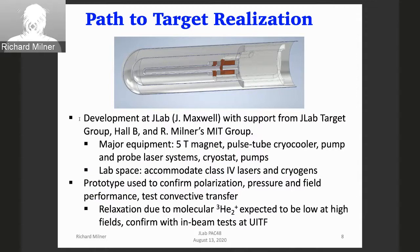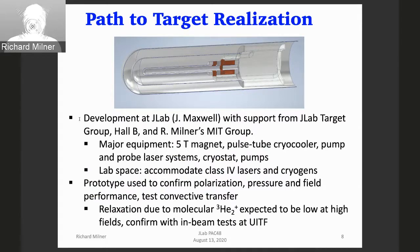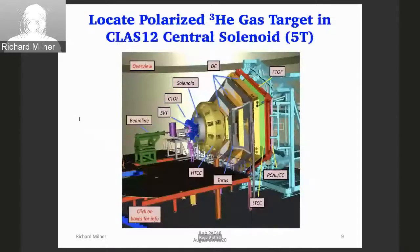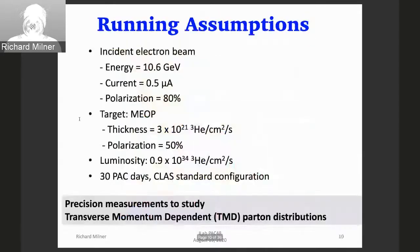Of course, one needs to put beam on it and test the beam depolarization. This was done extensively for the Caltech target, but all at low field — this has to be done at high field. The idea is, if we do this, we can locate the target directly in the center of the CLAS12 detector.